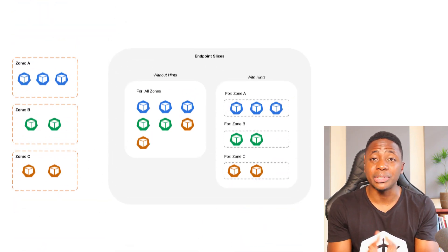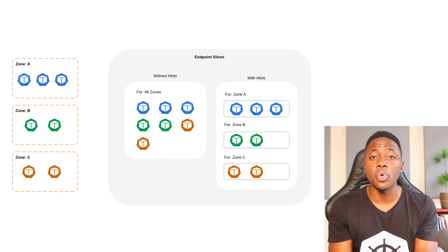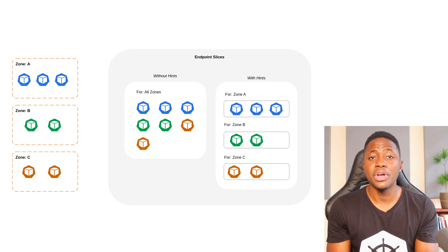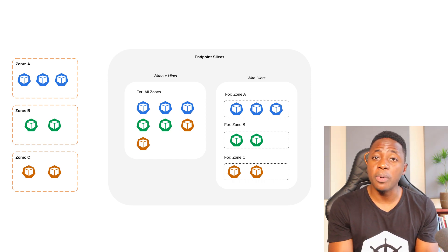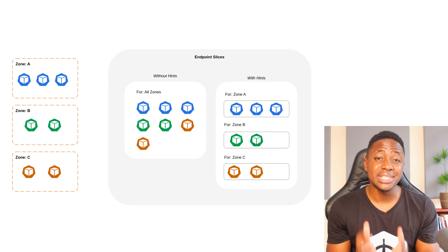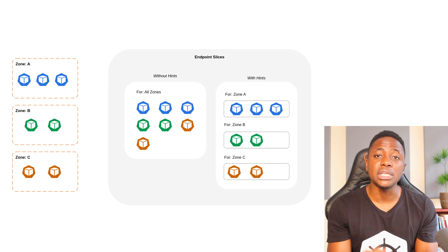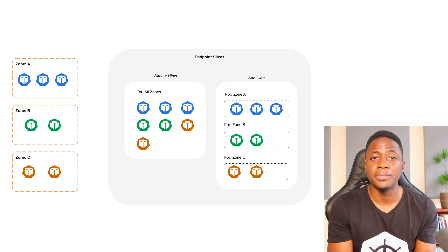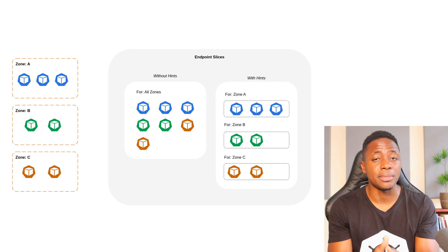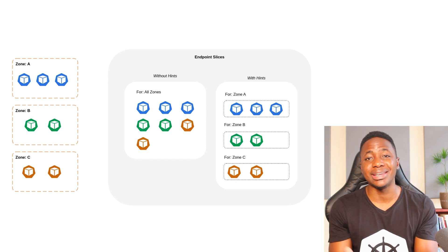When Topology Aware Hints are enabled and implemented on a service, the Endpoint Slice controller will proportionally allocate endpoints to the different zones that your cluster is spread across. For each of those endpoints, it will also set a hint for the zone — hints describe which zone an endpoint should receive traffic for. The Kube Proxy will then route traffic from a zone to an endpoint based on those hints. In some cases, the Endpoint Slice controller may apply a hint for a different zone to maintain an even distribution of traffic. Lastly, I'm going to be using Karpenter the same way as before — it will respect the pod topology spread constraints when adding nodes to the cluster.